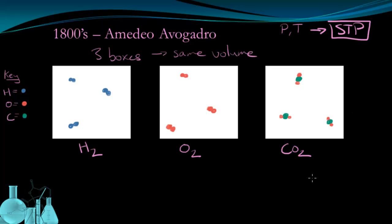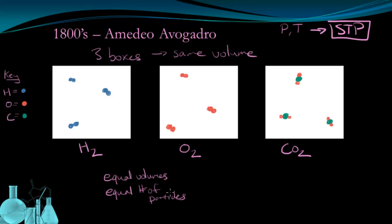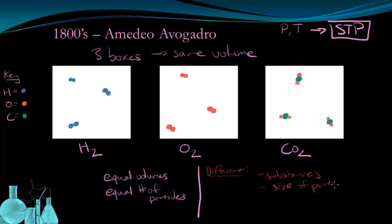We can make a number of observations on this scenario. The first is that we have equal volumes of gases, because the containers are all equal volume. And in these equal volumes of gases, we have an equal number of particles. But what's not the same? We have different substances — hydrogen, oxygen, and carbon dioxide. The size of each particle is different: carbon dioxide particles are larger than oxygen, which are larger than hydrogen.